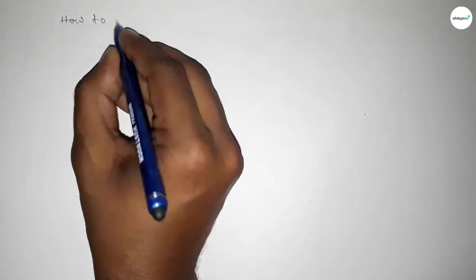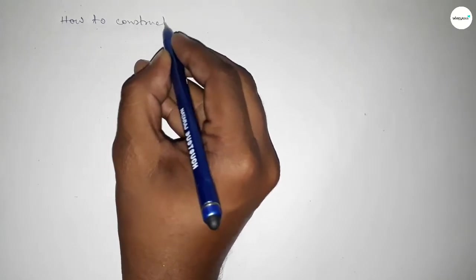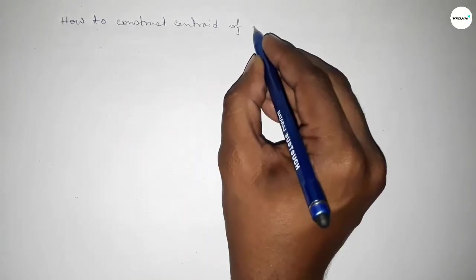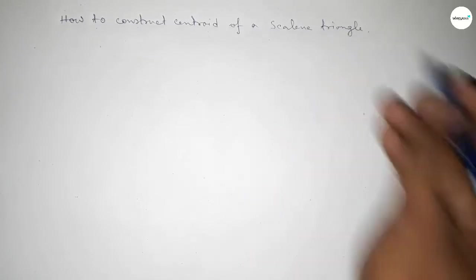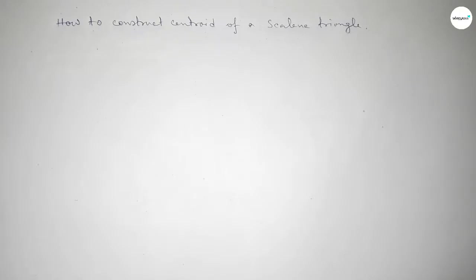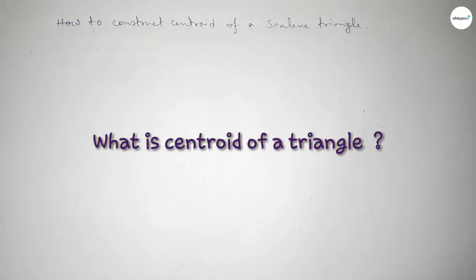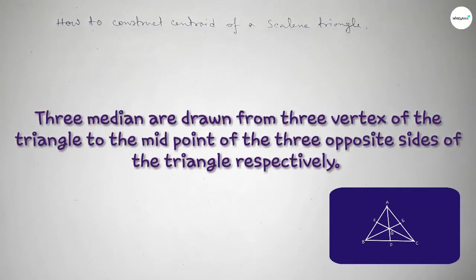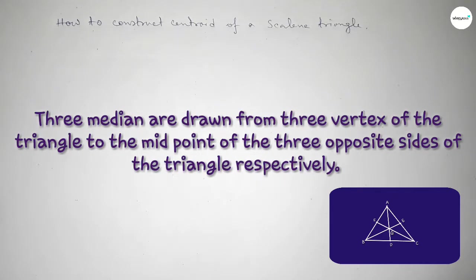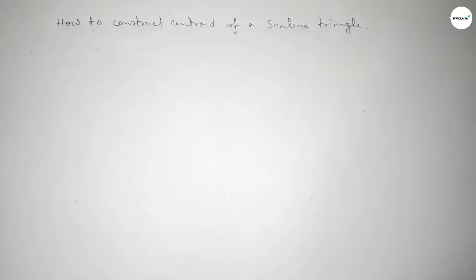Hi everyone, welcome to Syser Classes. Today in this video we have to construct the centroid of a scalene triangle using a compass in an easy way. First, talking about what is the centroid of a triangle: centroid is the point of intersection of the three medians of a triangle, and the three medians are drawn from the three vertices of the triangle to the midpoints of the three opposite sides respectively.